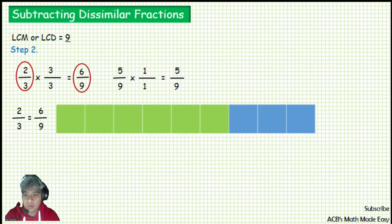This is our blocks. And there are 9 pieces of blocks because our LCD is 9. Each block represents 1 over 9, and we have 6 green blocks because our numerator is 6.